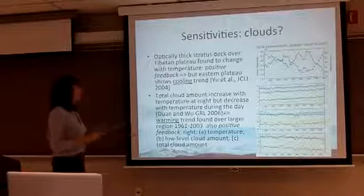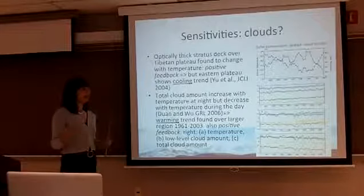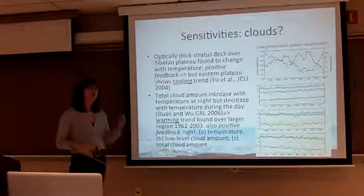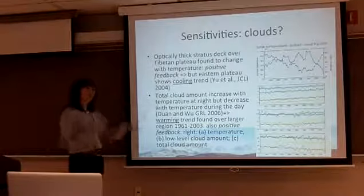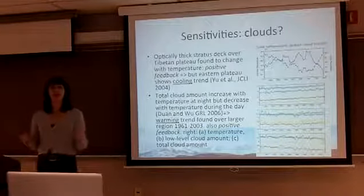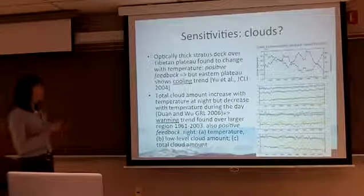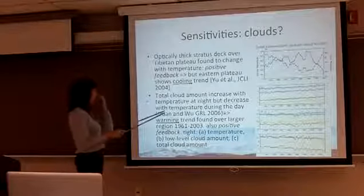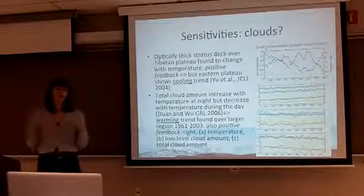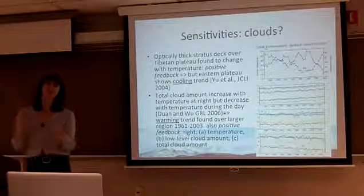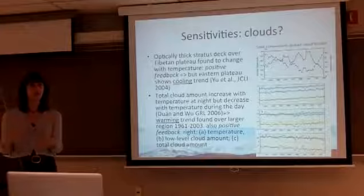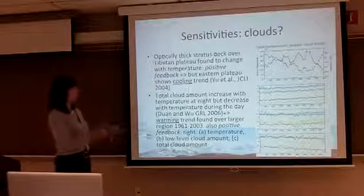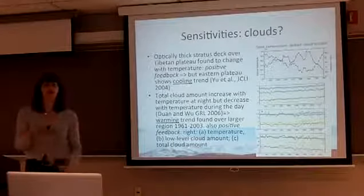Another study did something similar, looking at total cloud amounts but over a much wider area of the Tibetan Plateau. For their area, temperatures are increasing. They found the same relationship between temperature change and cloud amount — decreasing cloud gives increasing temperature. But they also found that at night, cloud amounts increase, which is still compatible with increasing temperature, because at night most of the cloud effect is in the infrared, causing an increasing temperature.